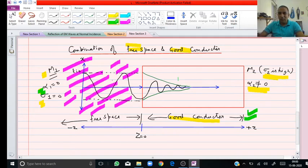We can say that in a good conductor, the EM wave will vanish very fast. This gives rise to the concept that good conductors cannot allow EM waves to pass.